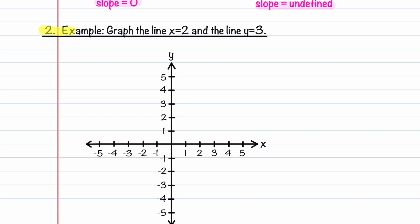Let's now look at our first example. We're going to graph the line x is equal to 2, and then graph the line y is equal to 3. The line x is equal to 2 is going to pass through the point (2, 0), and our line looks like this. Let's mark this line as x is equal to 2.